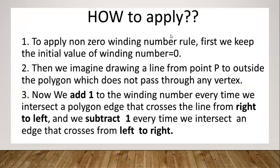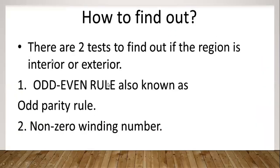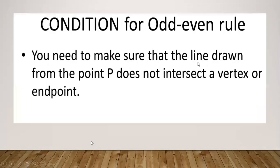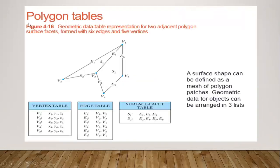Moving on to the next topic — polygon tables. A polygon is a closed figure; all its vertices and edges must be closed. For example, vertices V1 to V3, V3 to V4, V4 to V5, V5 to V1 form a polygon. If edge E6 is deleted, it is no longer a polygon. To represent the vertex table and edge table of a polygon, we use different polygon tables.